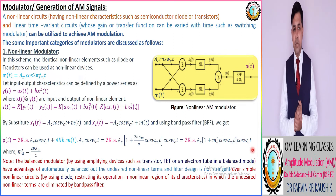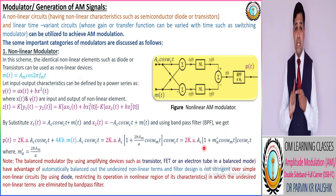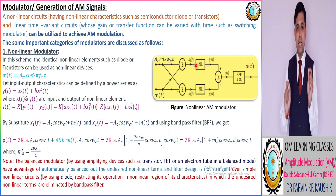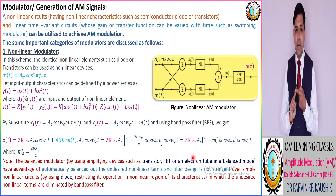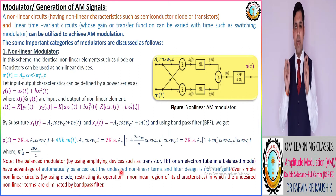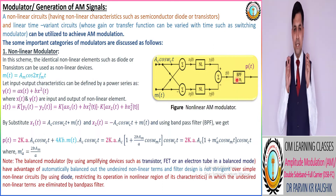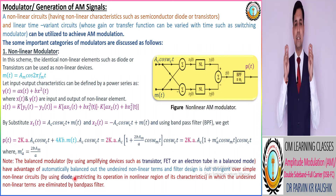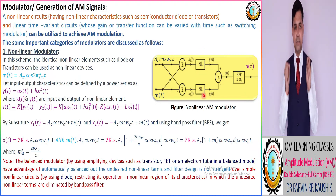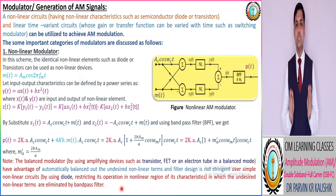As per important observations, we have the balanced modulator. By using an amplifying device — it can be your transistor, FET, or electron tube — in the balanced mode, it has the advantage of automatically balancing out the undesired non-linear terms, which makes the filter design simple. This is different if we utilize the semiconductor diode operated in the non-linear region of its characteristics as the non-linear device.